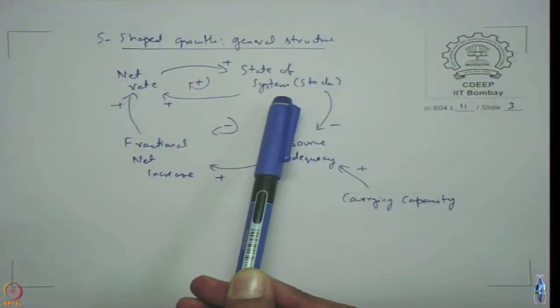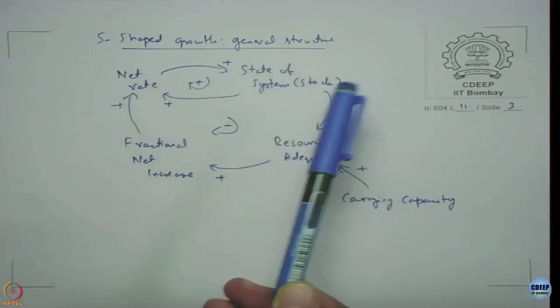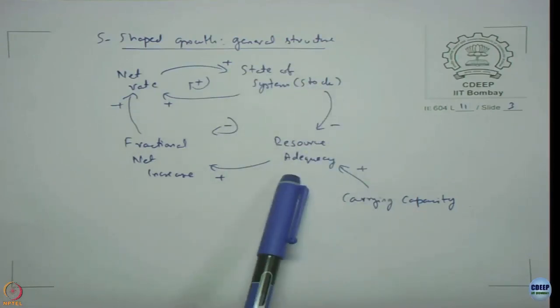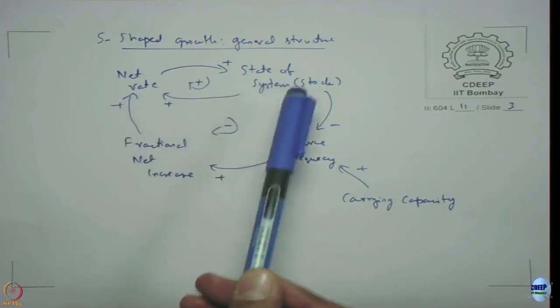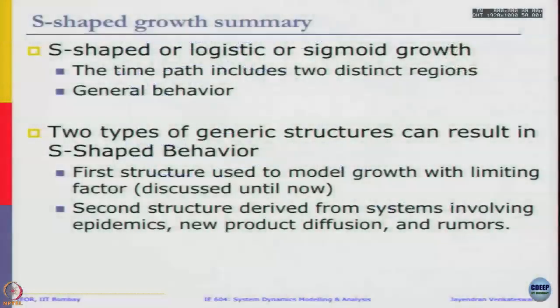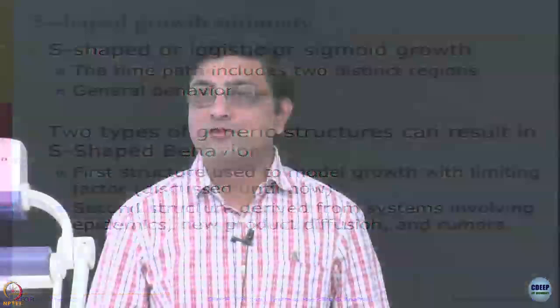This is the first structure we have seen which can model growth with a limiting factor — the carrying capacity. A second structure involves systems like epidemics, new product diffusion, and rumors, where the two feedback loops may not be very apparent but still produce S-shaped growth.